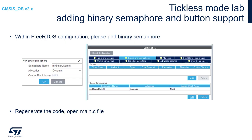Next, create a simple binary semaphore. Please go to FreeRTOS configuration, then select the Timers and Semaphores tab. Within the Binary Semaphores group, click Add to create a new binary semaphore. Please keep all default values within the new semaphore creation window and press OK. After this, the new binary semaphore should appear on the list within the FreeRTOS configuration window. Let's save the project, generate the code, and open main.c.